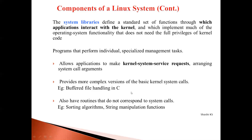A third task performed by system libraries is implementing some basic commonly used routines that may not be directly related to system calls. Some examples are sorting algorithms — for instance, the C library has sorting functions not corresponding to system calls — and many string manipulation functions in the C library, which are also implemented by system libraries but do not correspond to system calls.